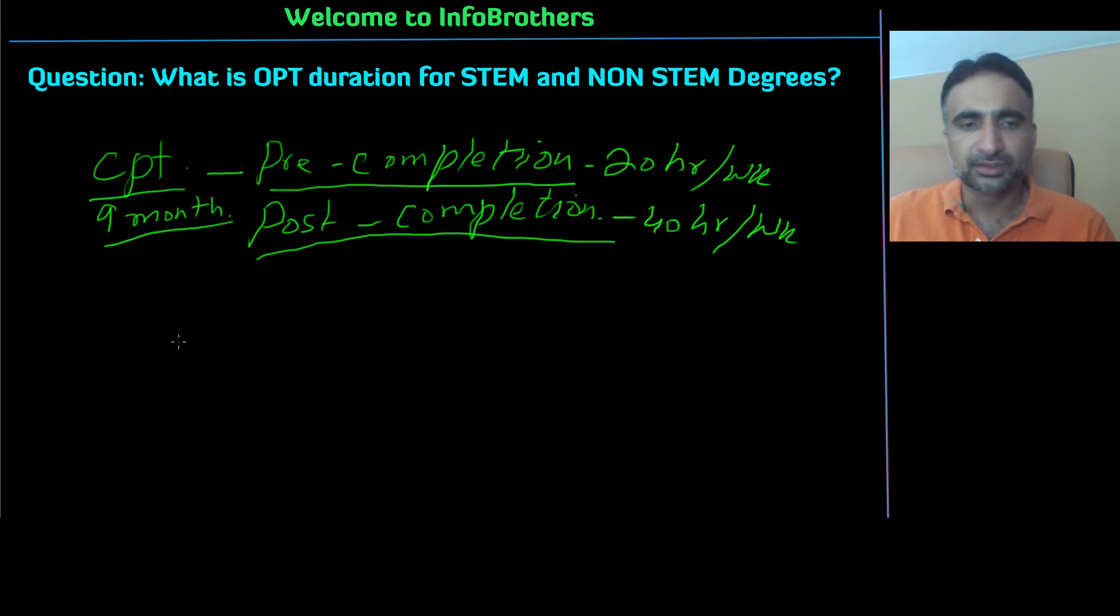In any case, the duration of your OPT depends upon your degree. So let's say you are doing STEM degree or you are doing non-STEM degree. STEM stands for Science, Technology, Engineering and Math. If you are working on your biology, computers, physics, chemistry degrees, you will be included in STEM. If you are working on arts such as fashion and some history degrees, you will be included in non-STEM degrees.